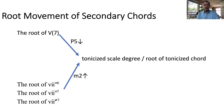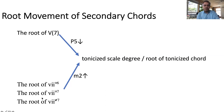So the root movements of secondary chords are as follows: a secondary dominant or any kind of dominant has a falling fifth from the root of the V chord to the tonicized scale degree — a perfect fifth down, or inverted, a perfect fourth up. And the root of a leading tone chord resolves a minor second up to the root of the tonicized chord or that scale degree.